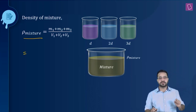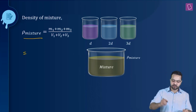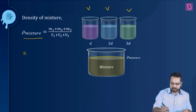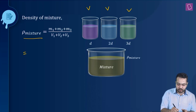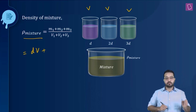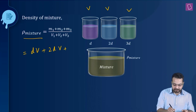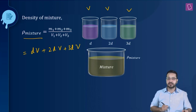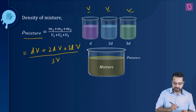The mass of the first liquid is its density multiplied by its volume. Let's assume the volume taken for each of the three liquids was V. So the mass of the first liquid is D×V, the second liquid is 2D×V, and the third liquid is 3D×V. The total volume is V + V + V, which equals 3V.